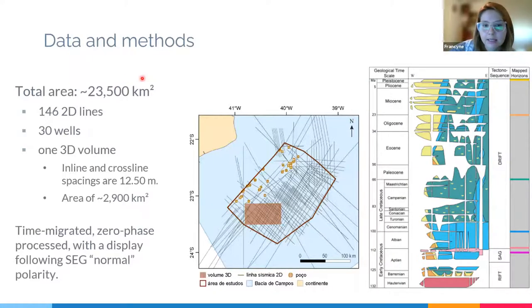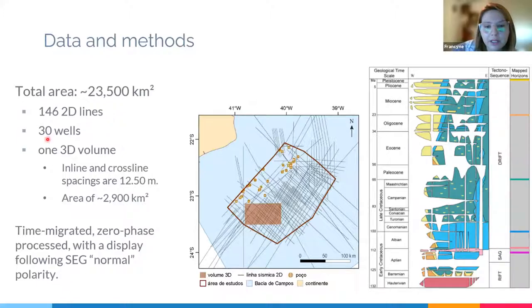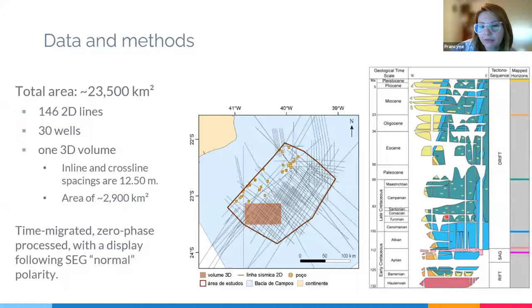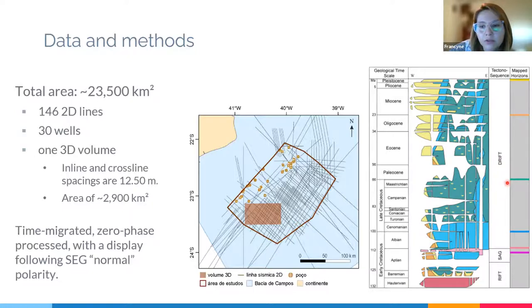The study area has a total area of about 23,500 square kilometers. It includes 146 2D seismic lines, 30 wells, and one 3D volume. The inline and cross-line spacing in the volume are 12.5 meters, and it has an area of approximately 2,900 square kilometers. The seismic data is time-migrated, zero-phase processed, with a display following SEG normal polarity. The stratigraphic column shows the mapped horizons: base salt in purple, top salt in pink, top Albion in blue, top Cretaceous in green, top Paleogene in orange, and top Neogene in yellow.